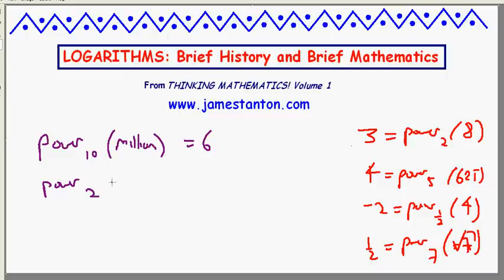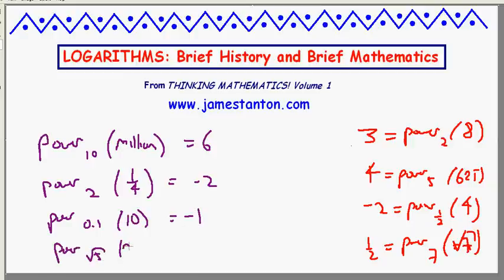Let me go a little bit further with some more examples. What power of 10 gives a million? You would say 6. Or what power of 2 gives a quarter? You would say negative 2. Or what power of 0.1 gives 10? You would say negative 1. Or what power of root 5 gives 25? You would say 4. Lots of fun just playing the power game. Very easy to understand.